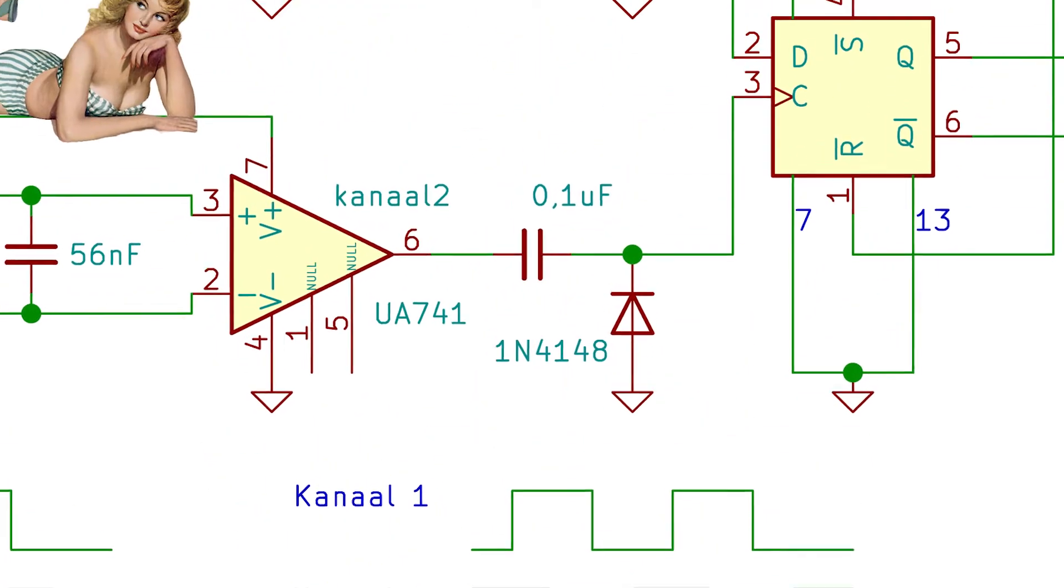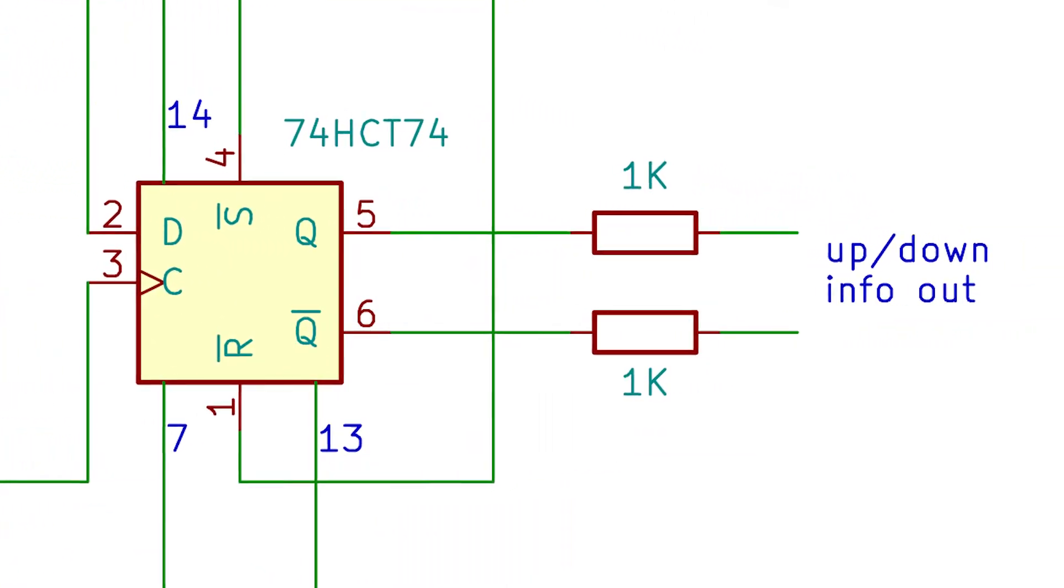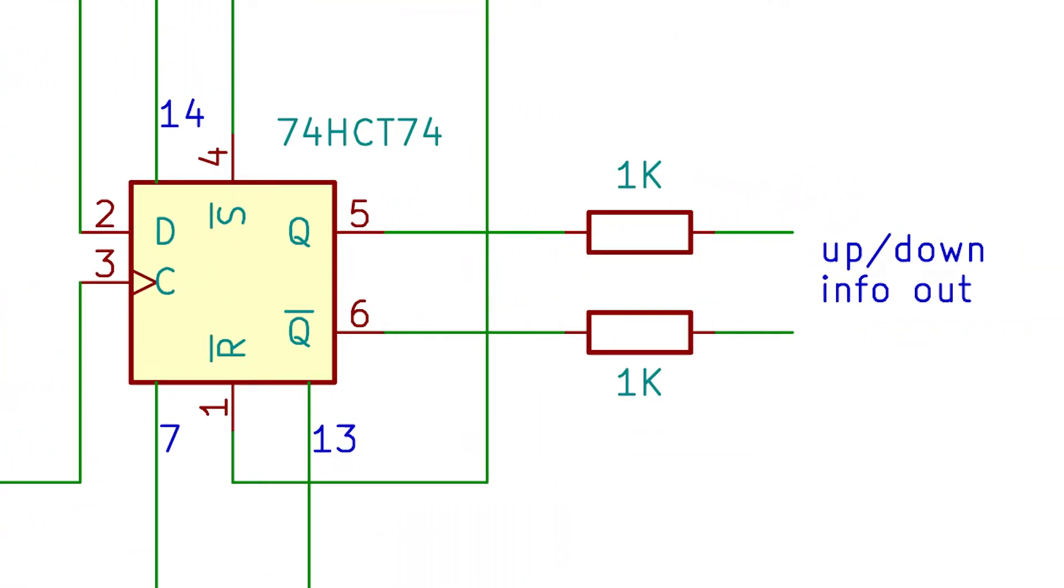So thanks to the fact that signals are 90 degrees shifted according to the direction of spindle rotation, the D flip-flop will give a high or low output.